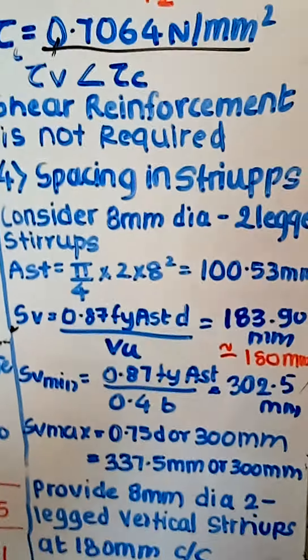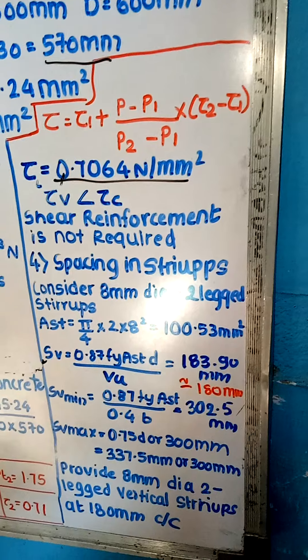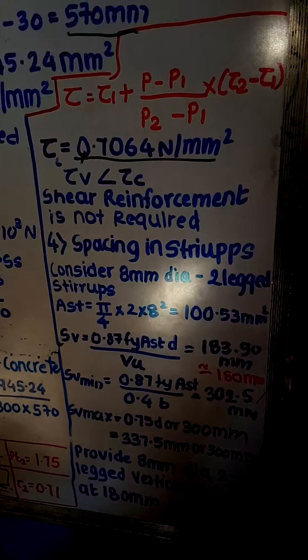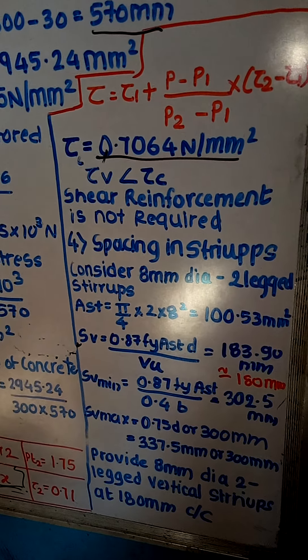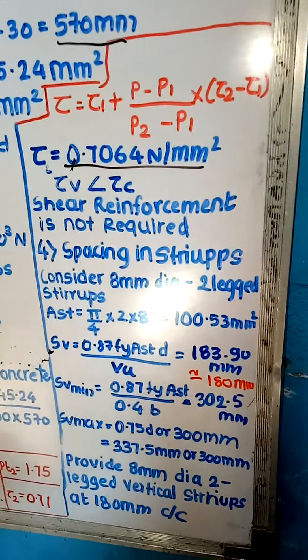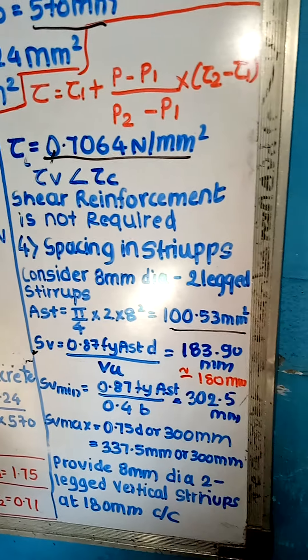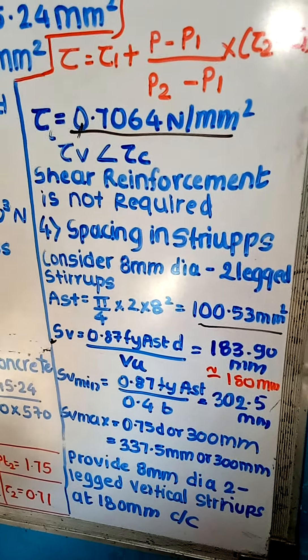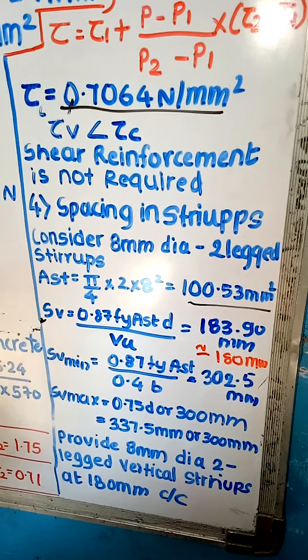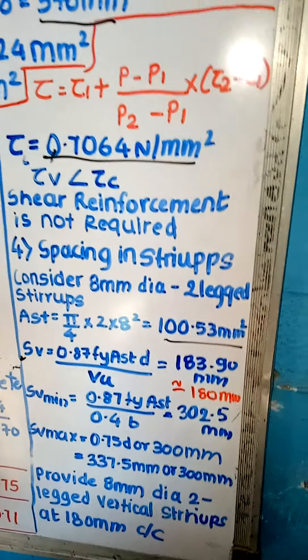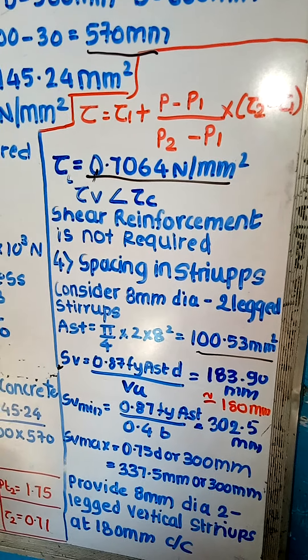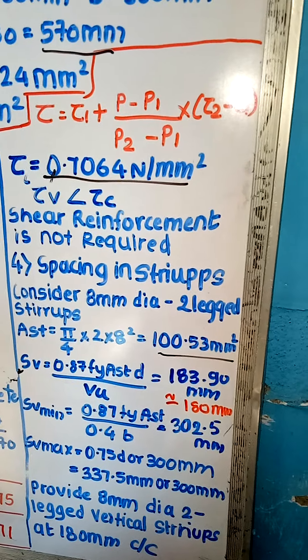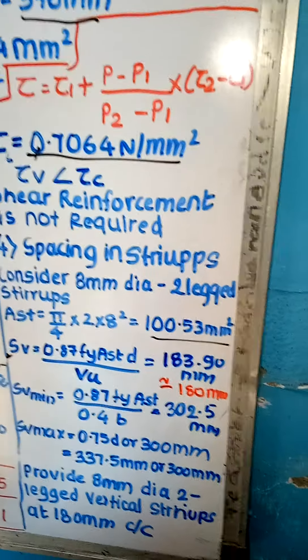Now fourth step: Spacing in stirrups. We will consider 8mm dia 2 legged stirrups. For this we have to calculate AST = π/4 into 2 into diameter 8 square. So the answer is 100.53 mm square. Now SV, we have to give spacing. SV is 0.87 FY AST d upon VU. 0.87 FY is 415 into AST into d which is 570 divide by VU which is 112.5 into 10 raised to 3. So it is 183.90 mm. We round it to 180 mm, which we are providing.